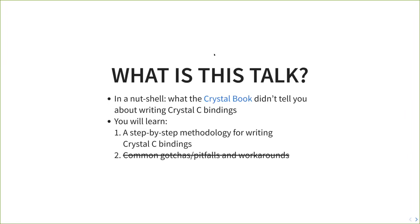So now that you're sold on Crystal C bindings, what is this talk in a nutshell? It's what the Crystal book didn't tell you about writing C bindings. The Crystal book covers basic things like how to map functions and C structures, but doesn't go much beyond that. What you'll learn here is a step-by-step, systematic methodology for writing Crystal C bindings — the same methodology I used for all my Ruby FFI bindings, now applied to Crystal.